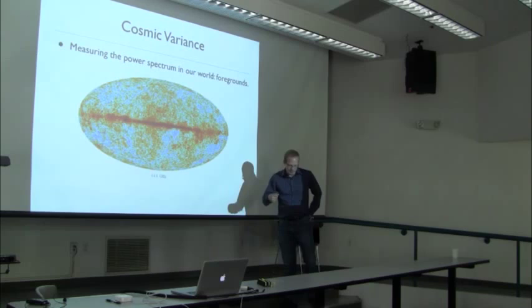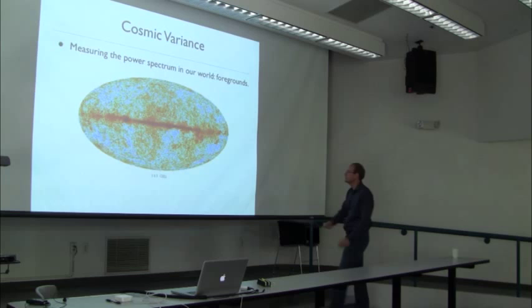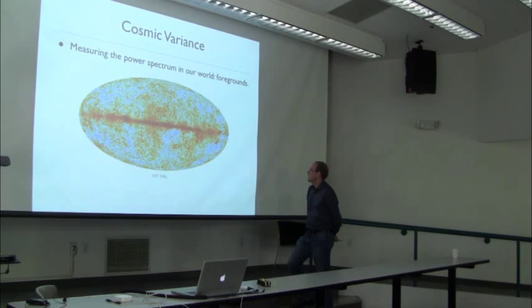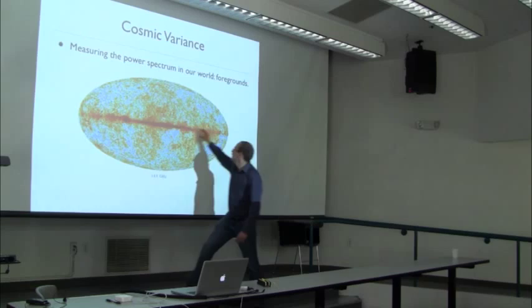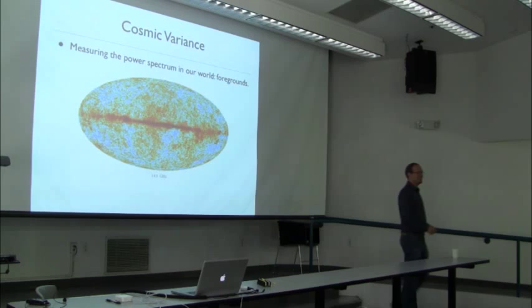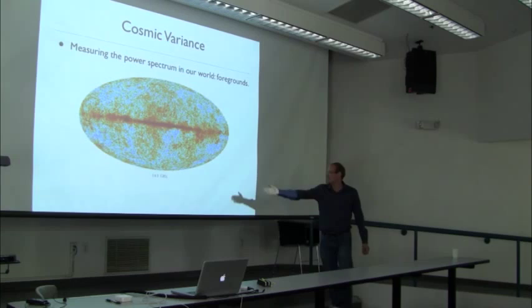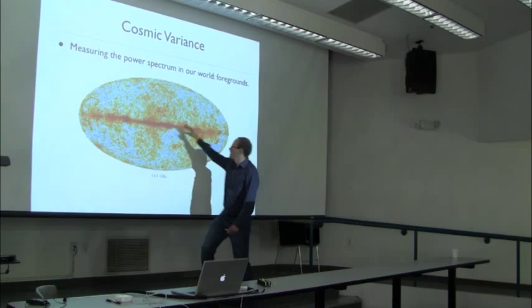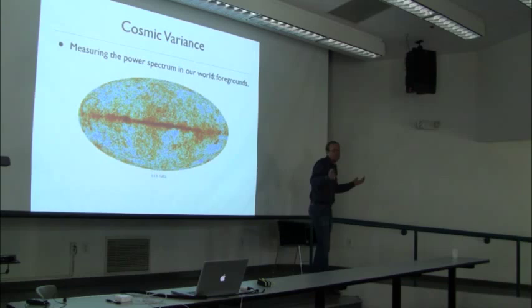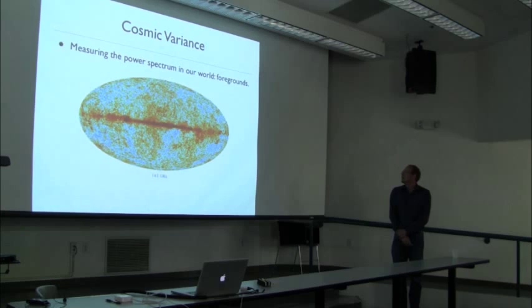We don't live in a perfect world. Here is data from the Planck experiment. Planck measures the CMB sky at different frequencies — this is 143 gigahertz, where the amplitude of the primordial fluctuations is maximized. But there's other signal: that band through the middle is the galaxy, which also emits radiation at this frequency. That's where the galactic signal is minimal compared to the primordial CMB, but it's still there — you can't get rid of the galaxy.